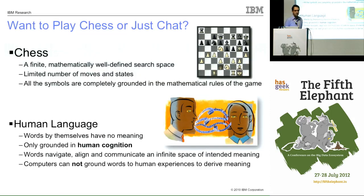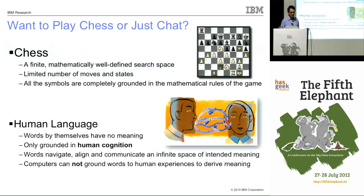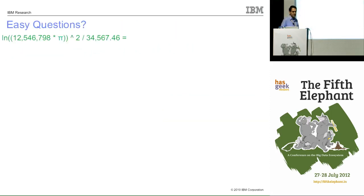Prior to this challenge, IBM had undertaken building a chess-playing computer in 1997. The reason this new challenge was chosen is that it occupies a very different space. In chess, the rules are well-defined and the search space, though large, is finite. Human language is ambiguous — words don't have meaning by themselves, context matters, and humans tolerate a lot of ambiguity in natural language. The search space is essentially quite a different sort of challenge than playing chess.